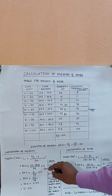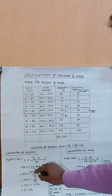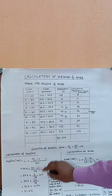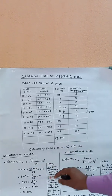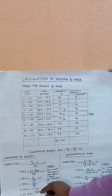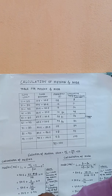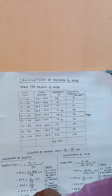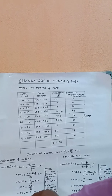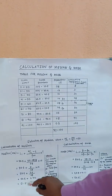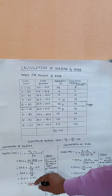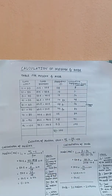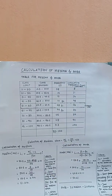We will substitute all values into the formula. The result is 51.214. So the median value is 51.214.